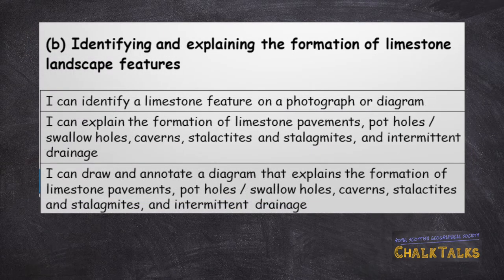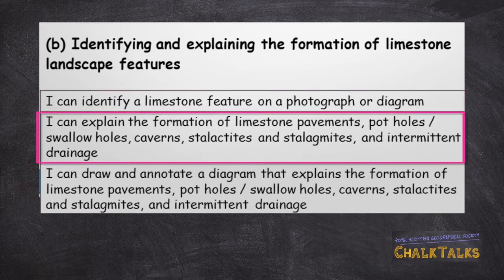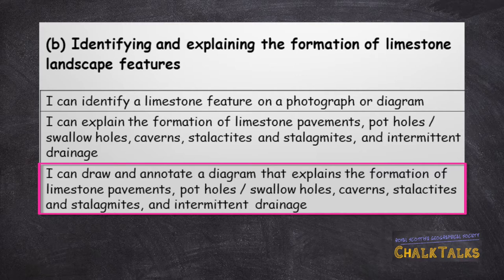For Part B, you will need to be able to identify limestone features from a photograph or a diagram, as well as an Ordnance Survey map, and to be able to explain the formation of those same limestone landscape features mentioned for Part A, as well as possibly to draw and annotate a diagram to explain the processes by which they form.